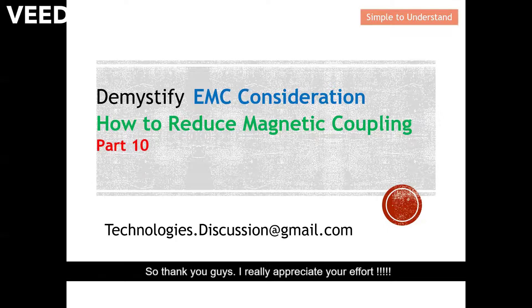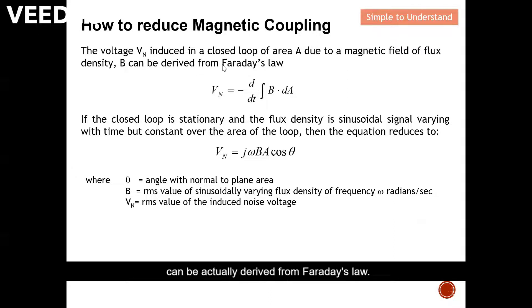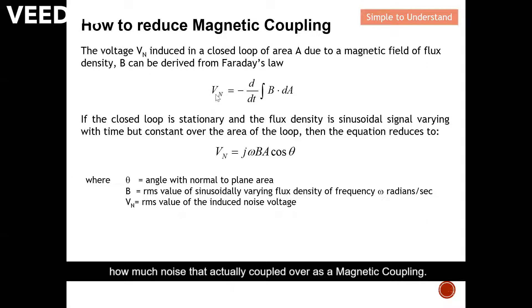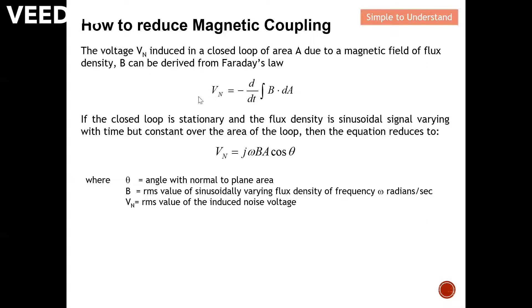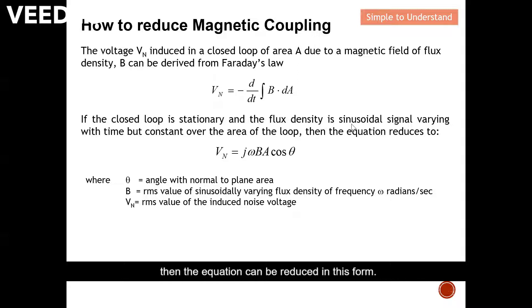How can we reduce the magnetic coupling? The voltage VN induced in a closed loop of area A due to a magnetic flux B can be derived from Faraday's law. Based on Faraday's law we can calculate how much noise actually couples over as magnetic coupling. If the closed loop is stationary and the flux density is sinusoidal — varying with time but constant over the area of the loop — then the equation can be reduced to this form.